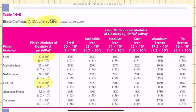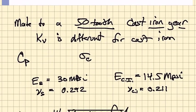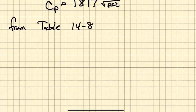And so what we would do if we wanted to use this table is we would look at the steel pinion and the cast iron gear, and we would get a value of CP that would be 2100 root PSI. So that is from table 14.8. We have that CP is 2100 root PSI.